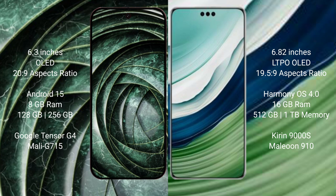Google Pixel 9a runs on the Android 15 operating system. Huawei Mate 60 Pro Plus runs on HarmonyOS. Google Pixel 9a comes with 8GB RAM and 128GB or 256GB internal storage, powered by the Google Tensor G4 processor with Mali GPU.